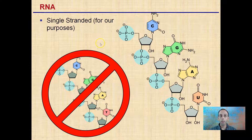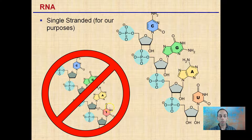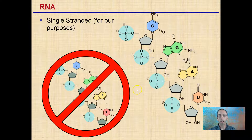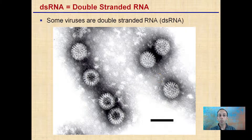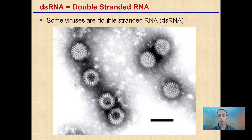RNA is single-stranded, basically for our purposes. We have a big circle with an X through the thymine marker here, so we can clearly indicate that this is DNA and not RNA. Seeing the presence of uracil is a characteristic that only RNA has. Keep in mind that some viruses do have double-stranded RNA, but we're mainly going to look at RNA as being single-stranded.